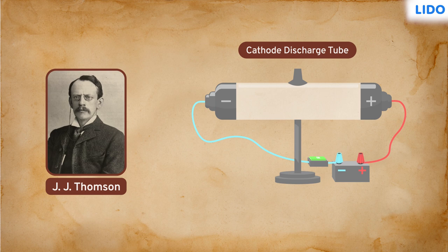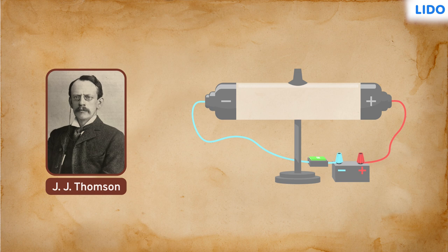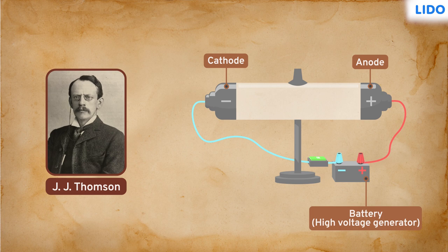One of the metal plates was connected to the positive terminal of a battery — it is called the anode plate. The other was connected to the negative terminal of the battery and it is called the cathode plate. The battery was used to produce high voltage inside the tube, and a vacuum was created between the two plates to reduce the pressure inside.